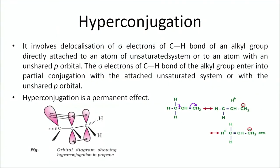The next topic is hyperconjugation. It involves delocalization of electrons of the C–H bond of an alkyl group directly attached to an atom of an unsaturated system or to an atom with an unshared p orbital. The electrons of the C–H bond of the alkyl group enter into partial conjugation with the attached unsaturated system or unshared p orbital. Hyperconjugation is a permanent effect, as seen from the figure.